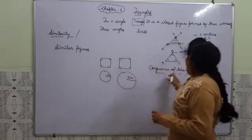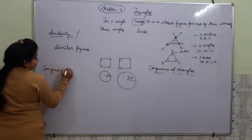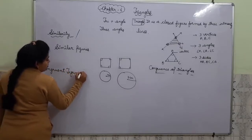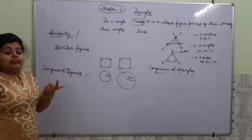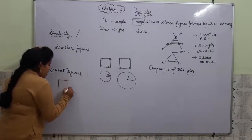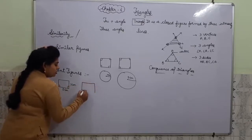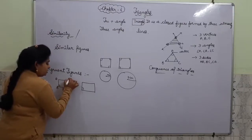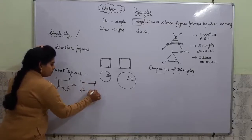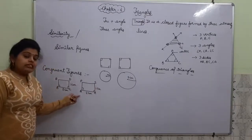Now when we talk about congruent figures: two figures are said to be congruent if their dimensions are the same. Suppose I have taken a rectangle ABCD with length 2 cm and width 1 cm, and another rectangle PQRS also with length 2 cm and width 1 cm. Then these two rectangles are said to be congruent.